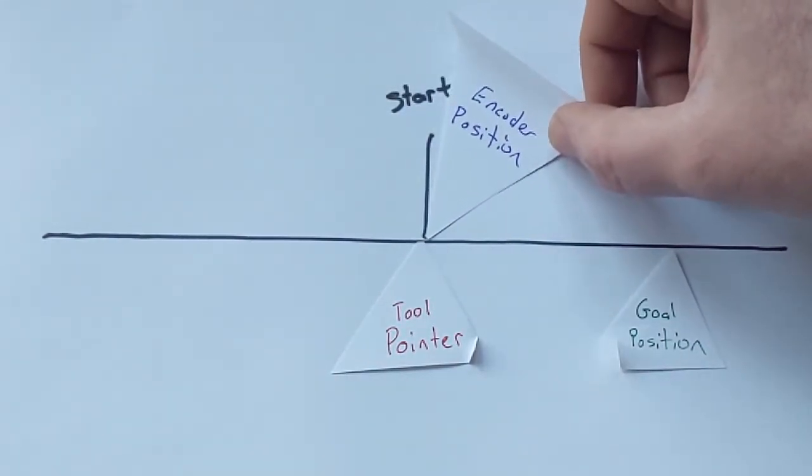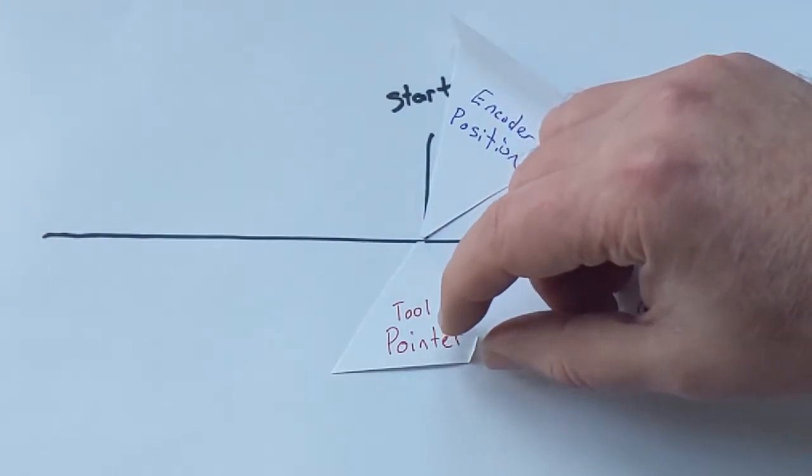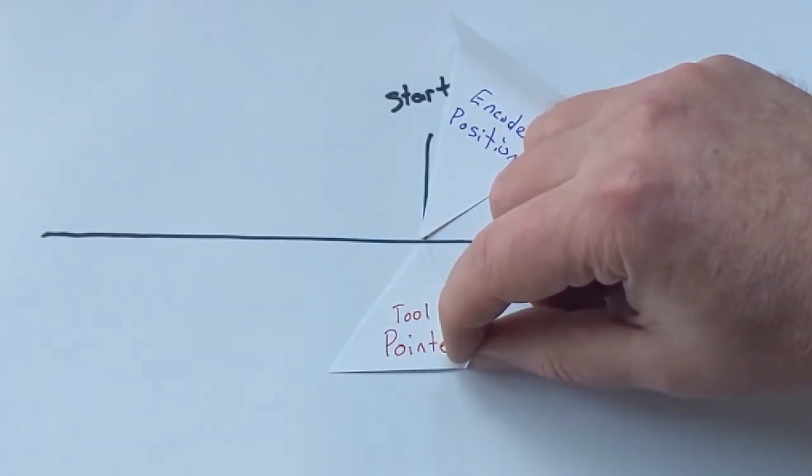And initially you're going to set your encoder position to the starting position and you're going to set a tool pointer to the starting position.